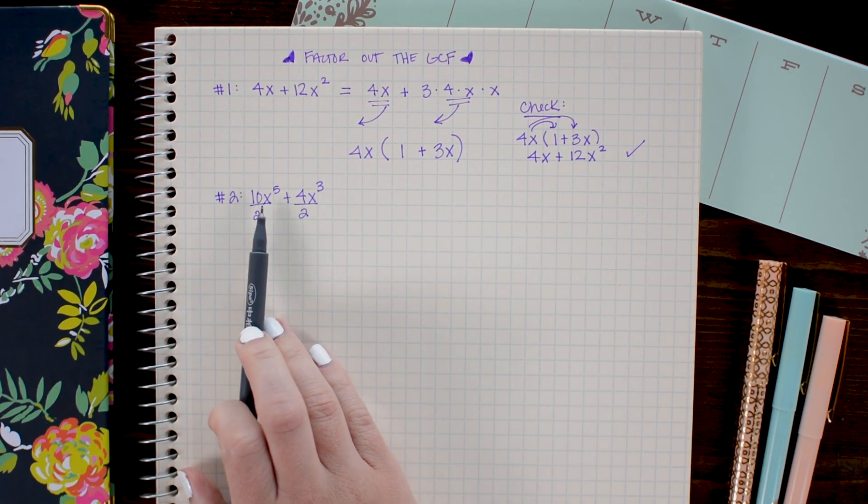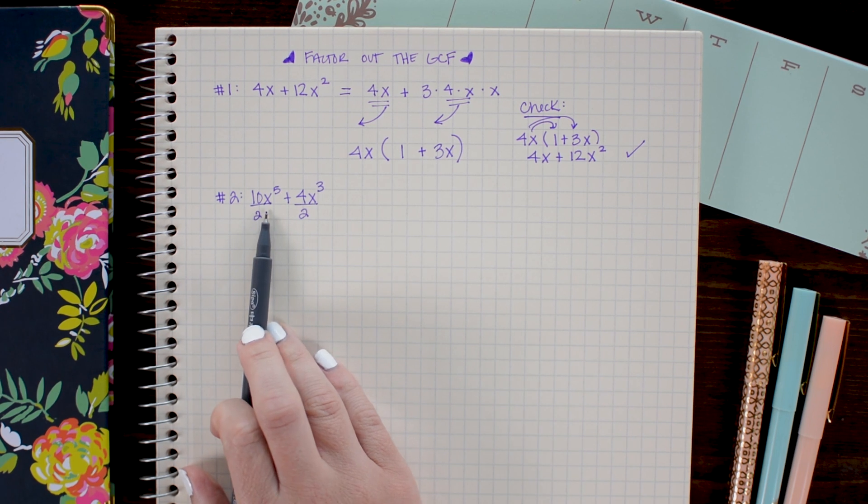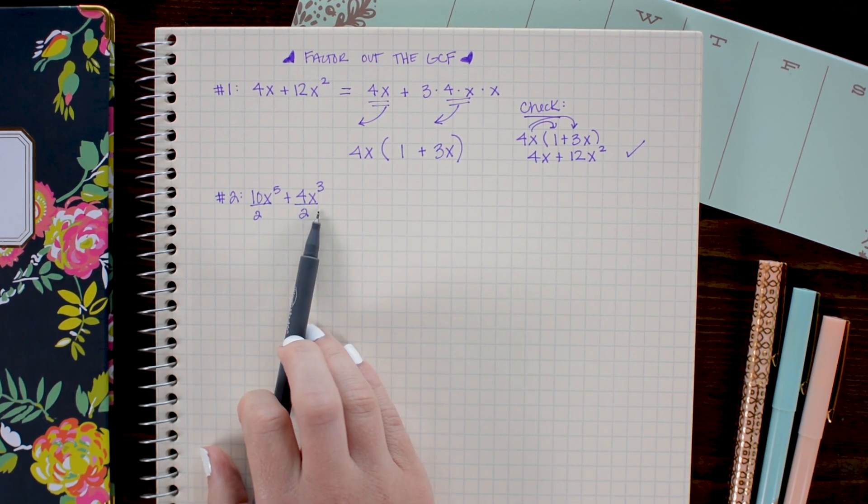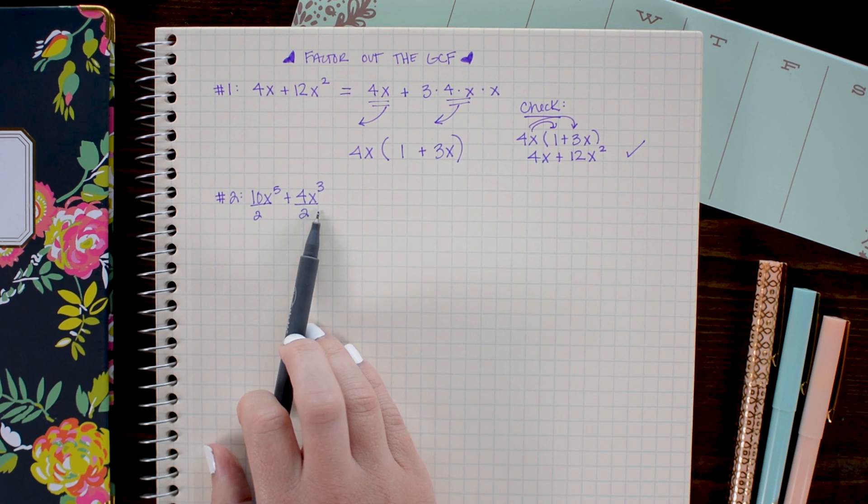I also see that this first term has 5x being multiplied together and this second term has 3x being multiplied together. So I have at least an x cubed I can divide out of both of these terms.